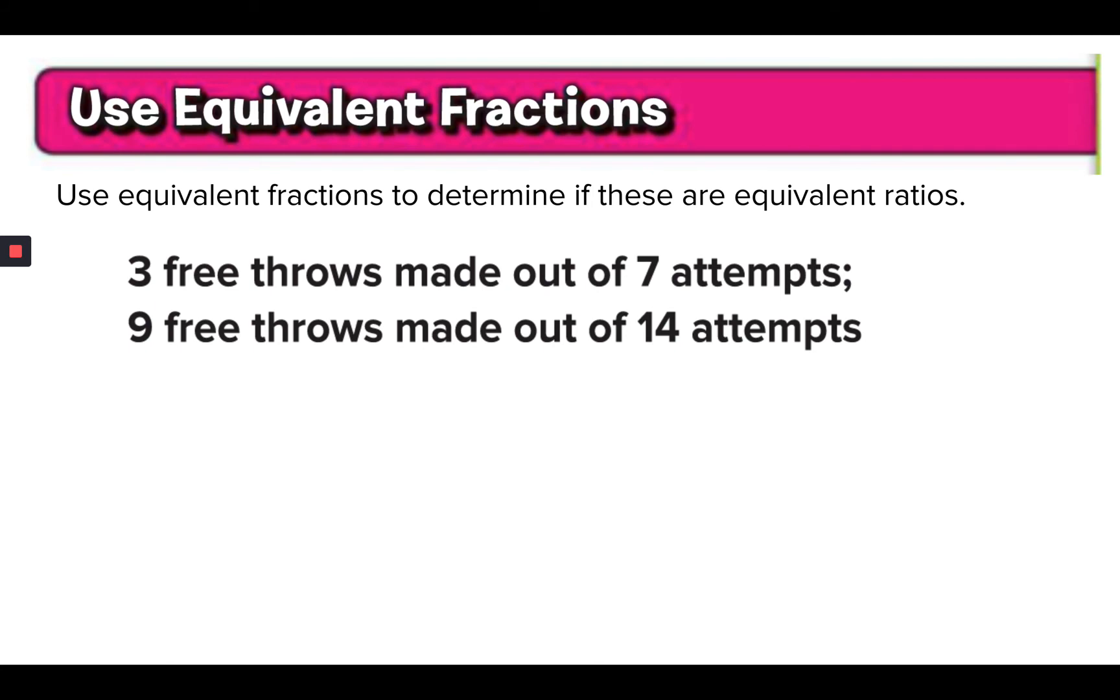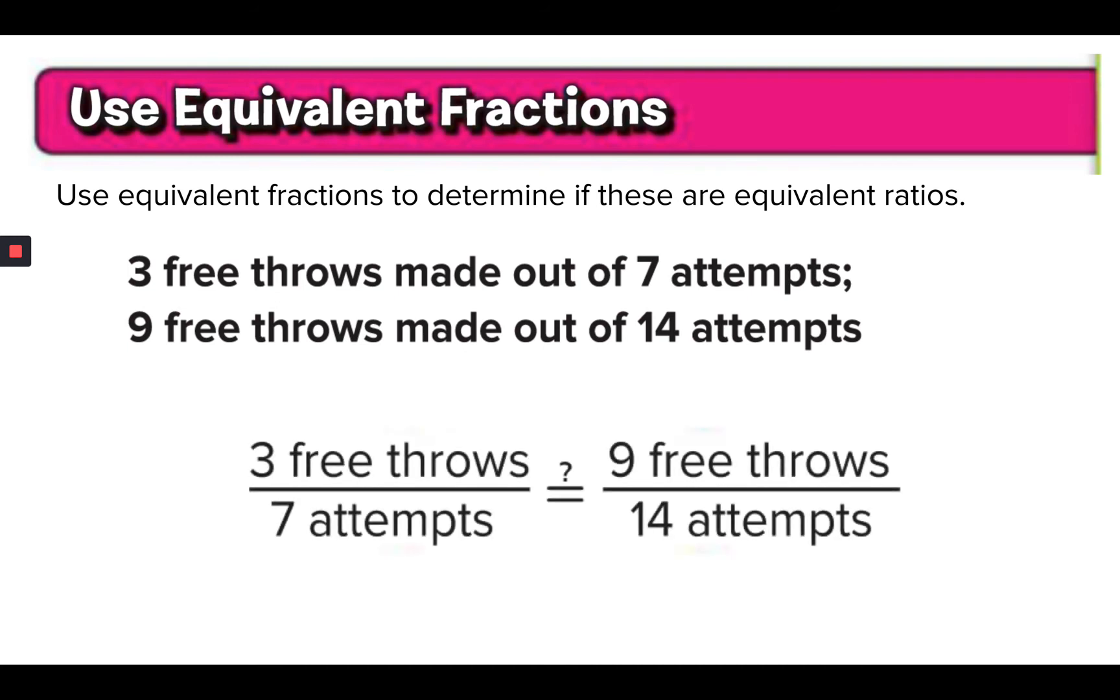So what the book is asking is yes or no are these equivalent ratios. 3 free throws made out of 7 attempts. 9 free throws made out of 14 attempts. So I set it up like a fraction. And what it wants you to do, what the book is saying is, if you look at this top number, 3 times what is 9?